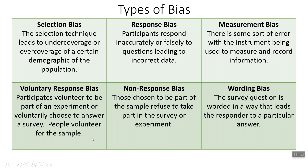Voluntary response bias — we talked about this with voluntary sampling. Participants volunteer to be part of an experiment or are voluntarily chosen to answer a survey. If people are volunteering to be part of your sample, you have some bias happening. If it's an experiment, we can randomly assign people to treatment groups, and that helps a lot. If it's a survey, that's probably not a great survey.